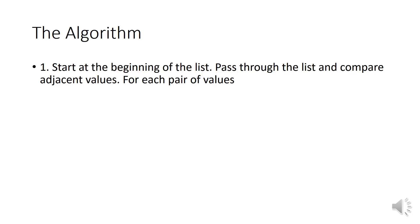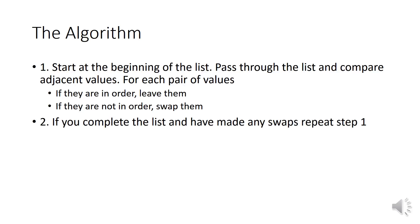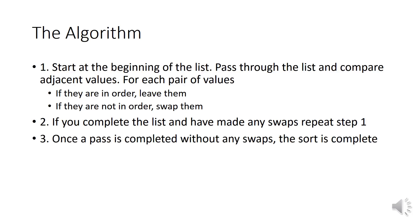So first we're going to go over the algorithm. Step one: you need to start at the beginning of the list, pass through the list and compare adjacent values. For each pair of values, if they're in order then we'll leave them how they are. If they're not in order then we're going to need to swap them around. If you go through the whole list and have made any swaps, then we're going to need to repeat step one. This is known as a pass and you need to keep doing these. Once the pass is completed without any swaps — once you've gone through all of step one without swapping any — then the sort is complete.